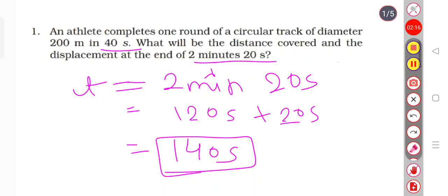So now we have to find distance. To find distance, we need to know how many rounds the athlete has completed in 140 seconds. So let's check that first.